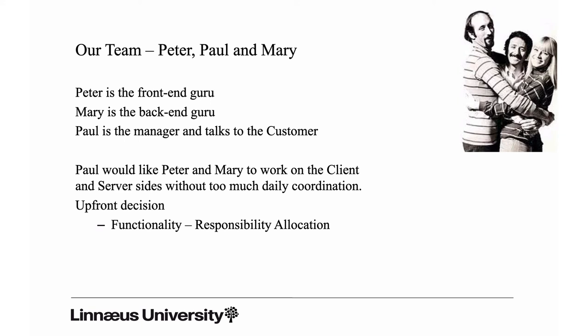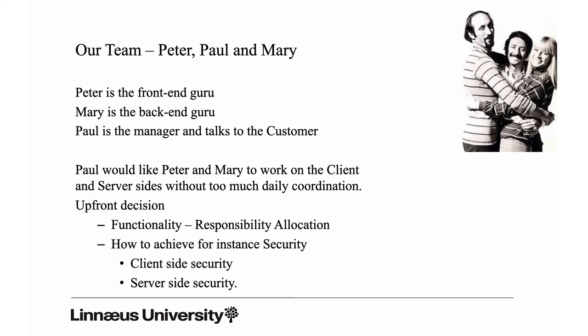Paul would also like to avoid daily coordination between Peter and Mary. So he wants them to first decompose and allocate responsibilities so they can work on their subsystems separately. However, there were also quality concerns — for instance, security. Security is a series of decisions that will have an effect on both the client side and the server side. Peter can't deal with security without Mary, and Mary can't deal with security without Peter, but Paul still wants them to work separately.